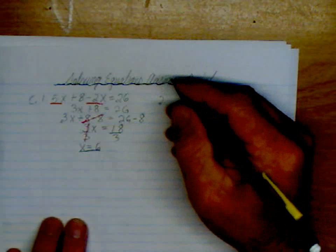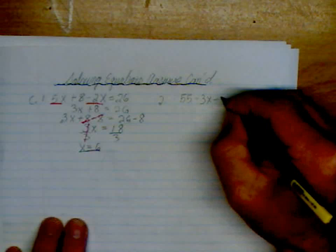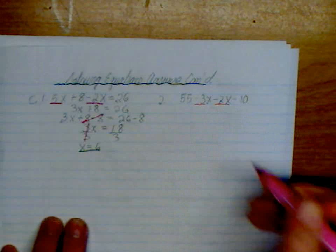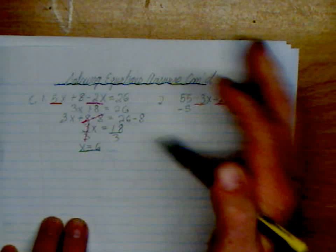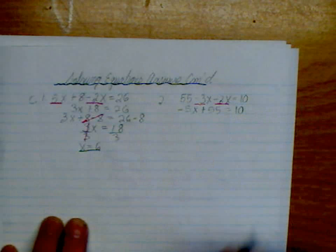Number 2, Part C, number 2. 55 minus 3x minus 2x is equal to 10. So we're both negative, so this is going to be a negative 5. Negative 5x plus 55 is equal to 10.